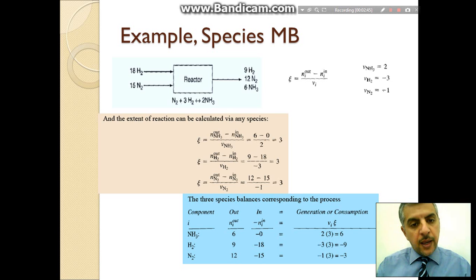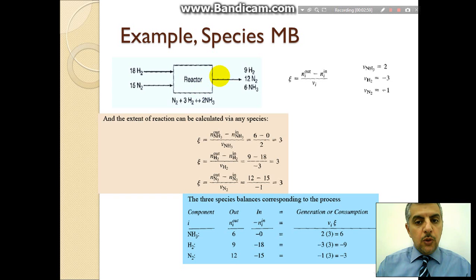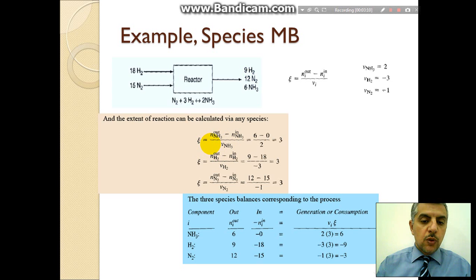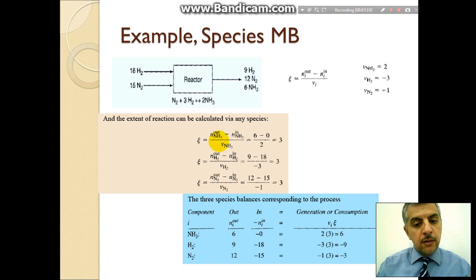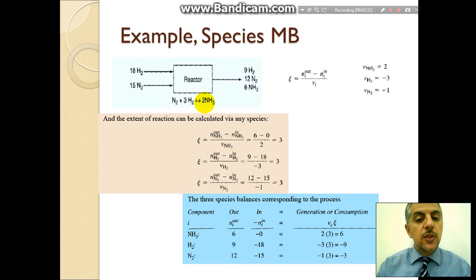Let us take an example of species material balance. Consider this reactor for the production of NH3 (ammonia). The extent of reaction can be obtained from any species. For example, it can be obtained from ammonia: the number of moles of ammonia out minus the number of moles of ammonia in, divided by the stoichiometric coefficient. The stoichiometric coefficient is taken from the chemical reaction. In this case, the extent of reaction equals 3.